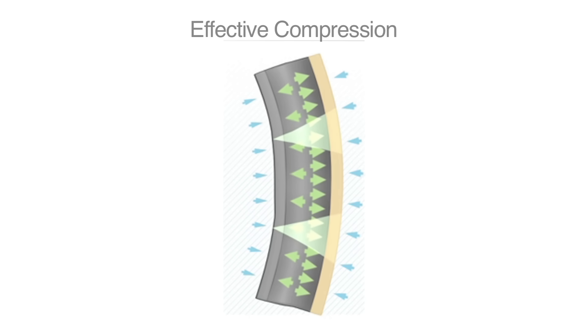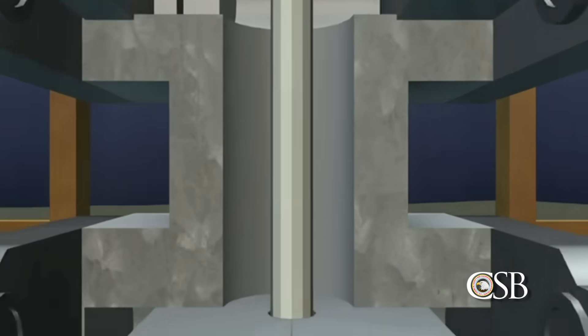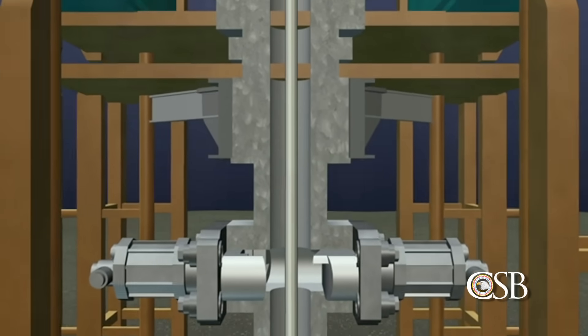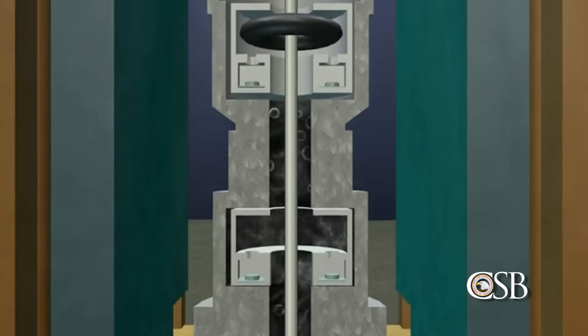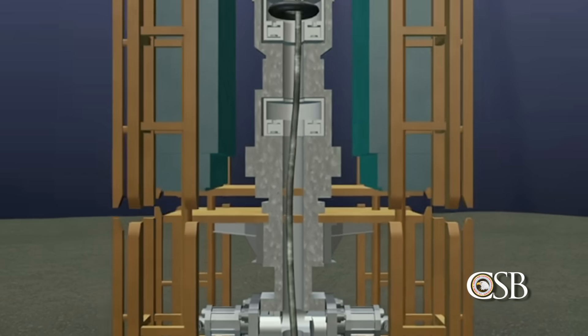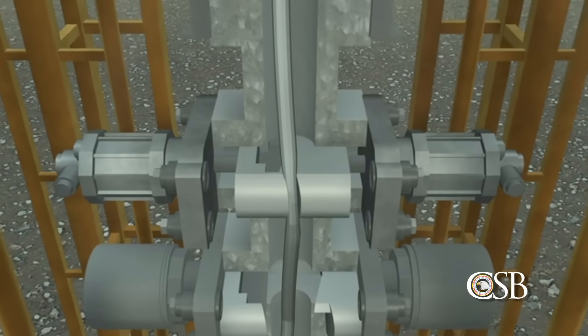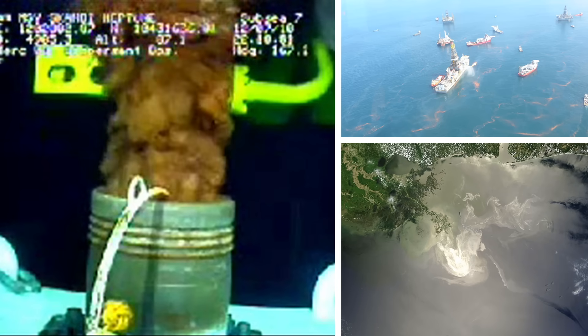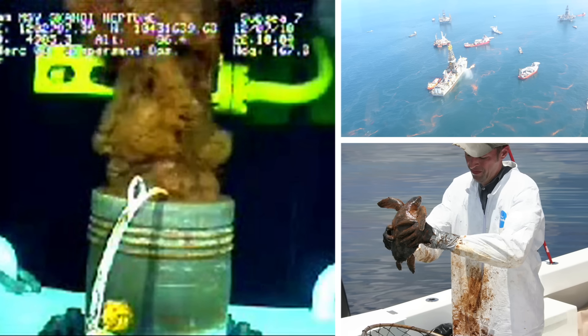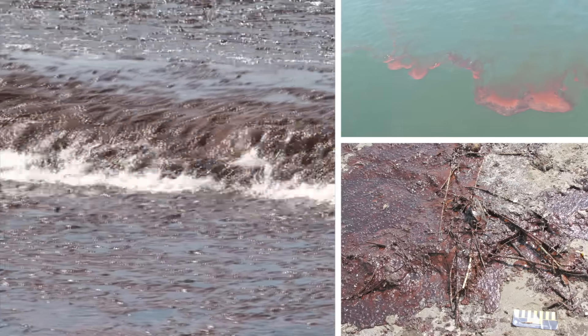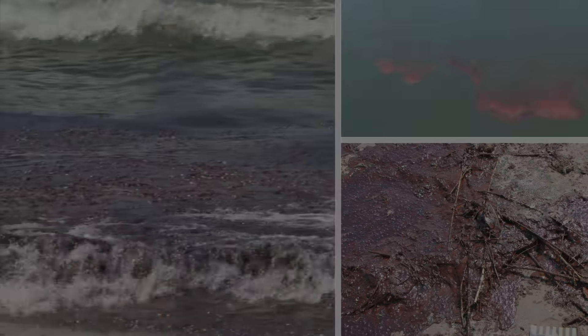This is an important finding, CSB investigators said, because the same conditions of differential pressure could occur at other drilling rigs, even if a crew successfully shuts in a well. The CSB warned this could make existing blowout preventer designs less effective in emergency situations. In the case of the Deepwater Horizon accident, the buckled drill pipe prevented the blind shear ram from sealing the well. Oil and gas from the well flowed out of the buckled drill pipe and into the Gulf of Mexico for 87 days. A reported 5 million barrels of oil eventually spilled, causing one of the worst environmental disasters in United States history.